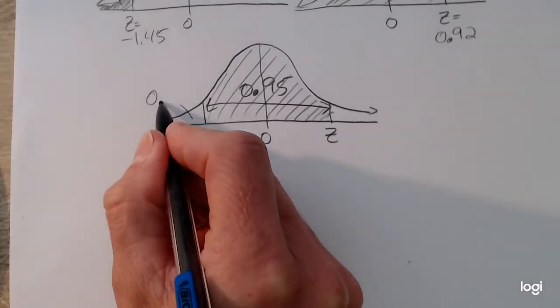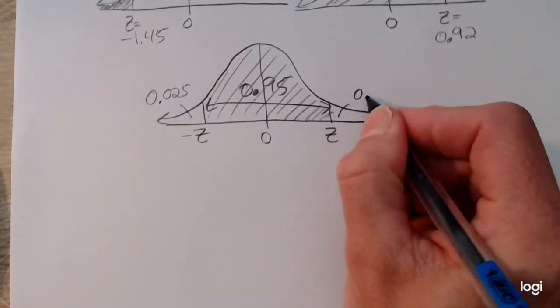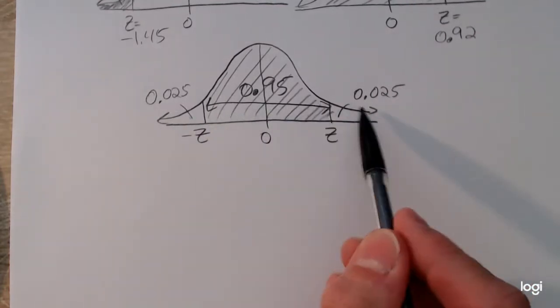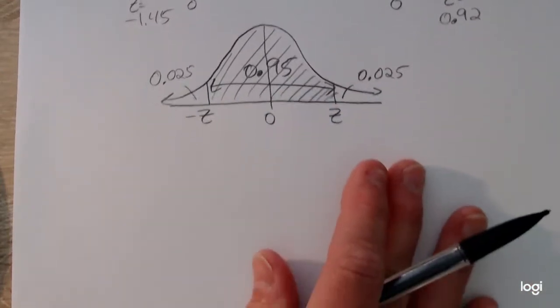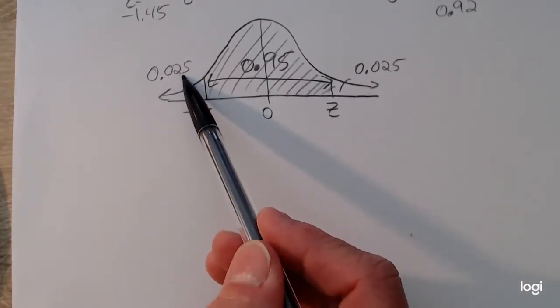And half of 5% is 2.5%. So as a decimal, this tail has 0.025 amount of area. And this tail has 0.025 amount of area. And you can verify that yourself by summing these up, and they should add to 1. So this gives me my input for my table.